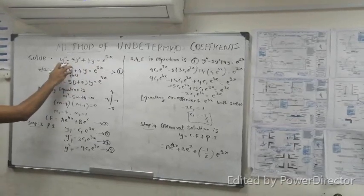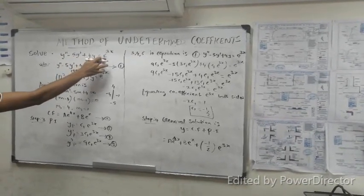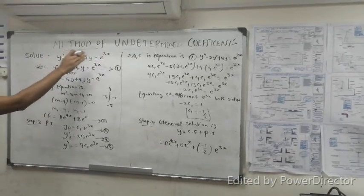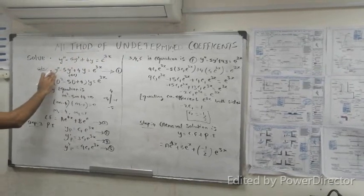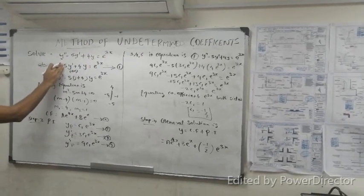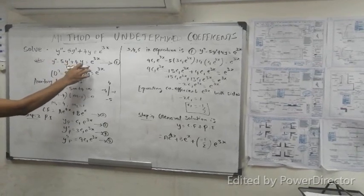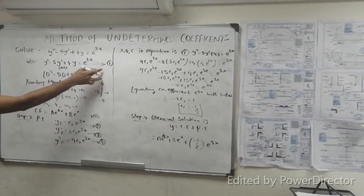Now I will explain to you the method of undetermined coefficients. The equation is y'' - 5y' + 4y = e^(3x). This is equation 1.